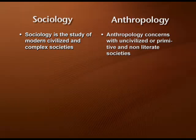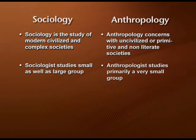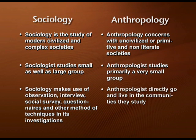Many sociologists have said that Sociology and Social Anthropology are almost the same, and they are termed as twin sisters. But there are some differences. Sociology is the study of modern, civilized, and complex society, whereas Anthropology concerns itself with uncivilized, primitive, and non-literate societies. Sociologists study small as well as large groups, but anthropologists primarily study very small groups. Sociology makes use of observation, interviews, social surveys, questionnaires, and other methods. But anthropologists usually go to a particular primitive place, stay with those pre-literate people, and then conduct their study.